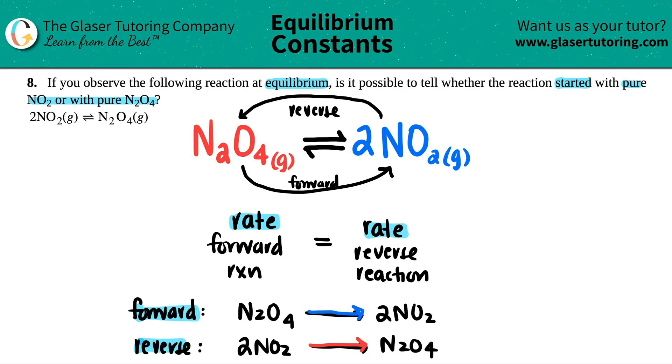So the answer here is no, it is not possible. If you have something in equilibrium, it's just going to go back and forth and the rates are going to be the same. You can't go back to the start. A reaction won't go back to the start once it reaches equilibrium.